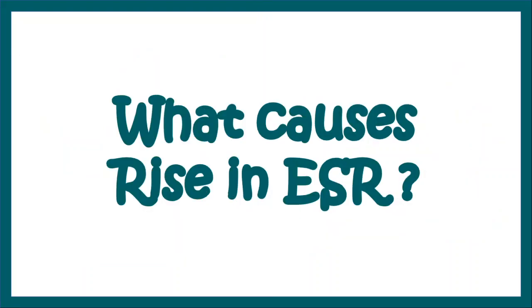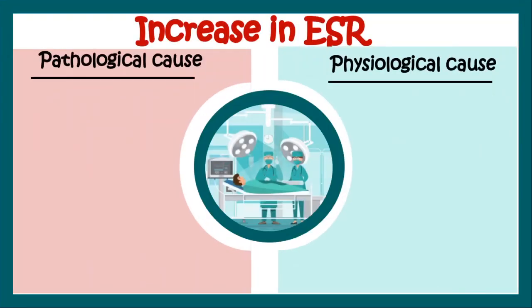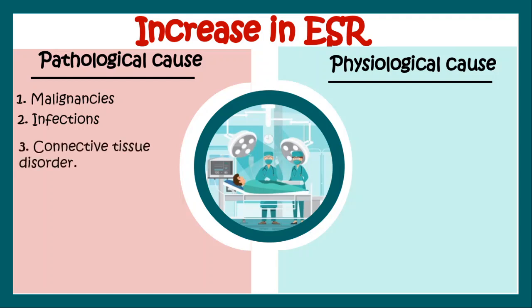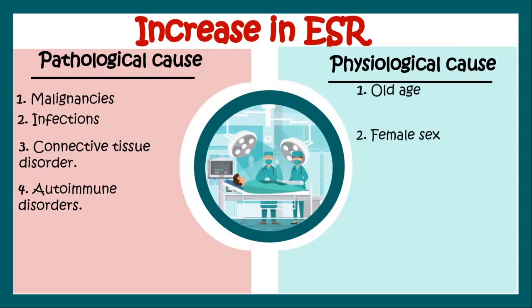What causes a rise in ESR? Rise in ESR can be pathological or physiological. Pathological causes include malignancies, infections, connective tissue disorders, as well as autoimmune disorders — that means mostly the inflammatory diseases. Whereas physiological rise can occur in old age, female sex, menstruation, and pregnancy.